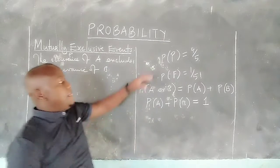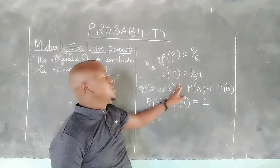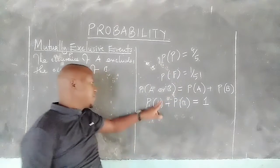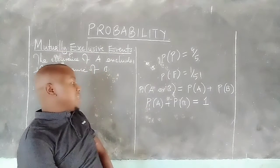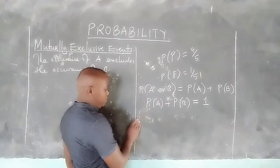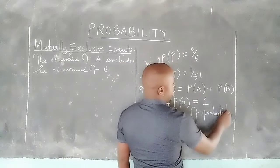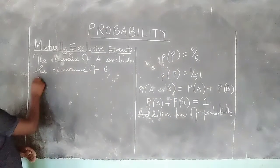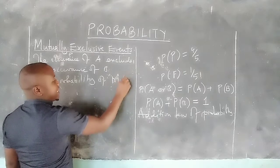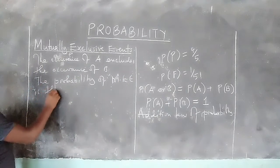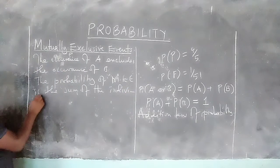Because if we say a student will pass, the only other outcome can be failing — you can either pass or fail. Therefore, we say that the probabilities of two mutually exclusive events are governed by what we call the Addition Law of Probability, which states that the probability of mutually exclusive events is the sum of the individual probabilities.